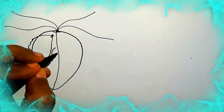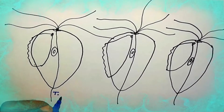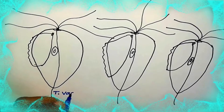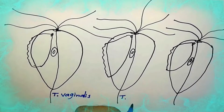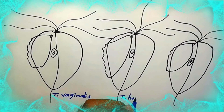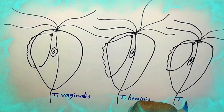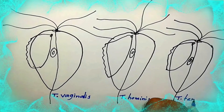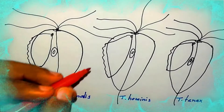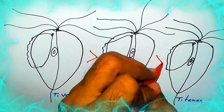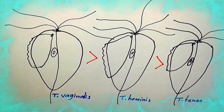There are three main Trichomonas species. According to size, Trichomonas vaginalis is the largest and Trichomonas tenax is the smallest.